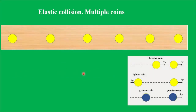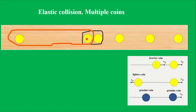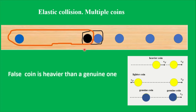In all previously considered cases, one of the colliding coins stopped. But this is not mandatory, and we will see this right now. We saw that these two coins moved in opposite directions after collision, and these two coins moved in the same direction. So the false coin is among these two and among these two. The only possibility is that this coin is the false one, and all others are genuine coins. The false coin is heavier than a genuine one, consistent with both observations.